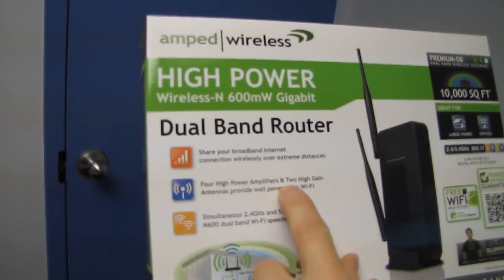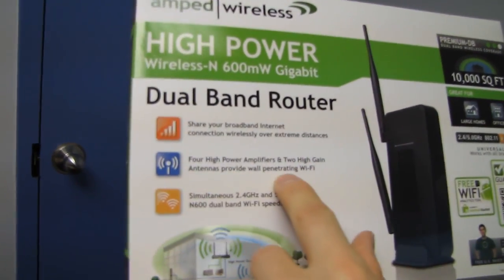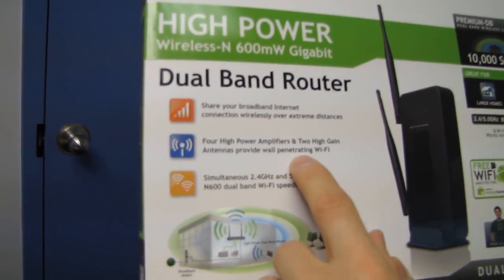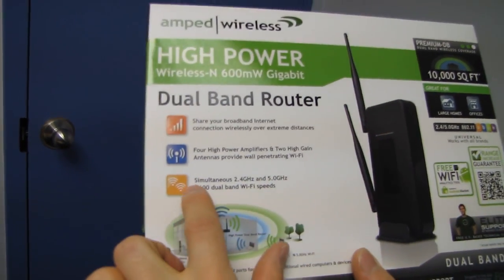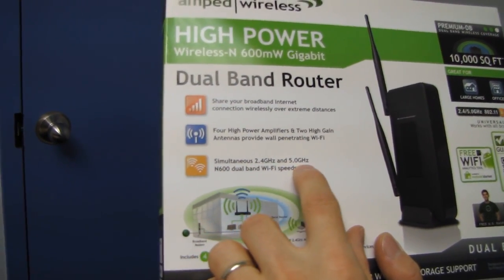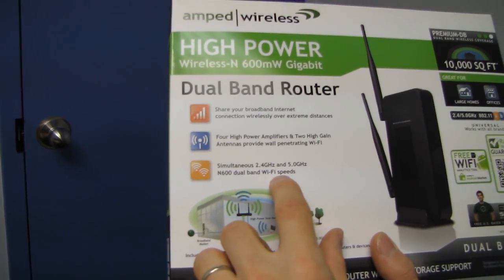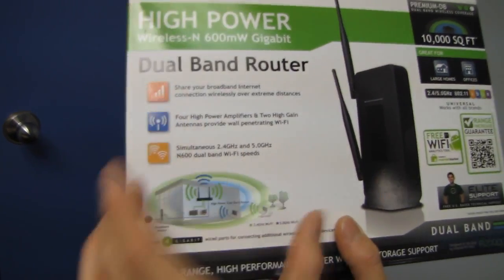Four high-power amplifiers and two high-gain antennas provide wall penetrating Wi-Fi. So this is a penetrating router. Simultaneous 2.4 gigahertz and 5.0 gigahertz N 600 dual band Wi-Fi speed. So it is a simultaneous penetrating router.